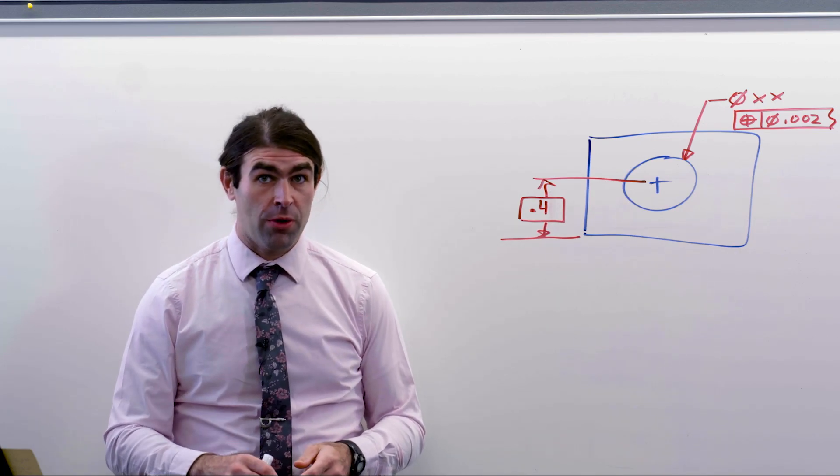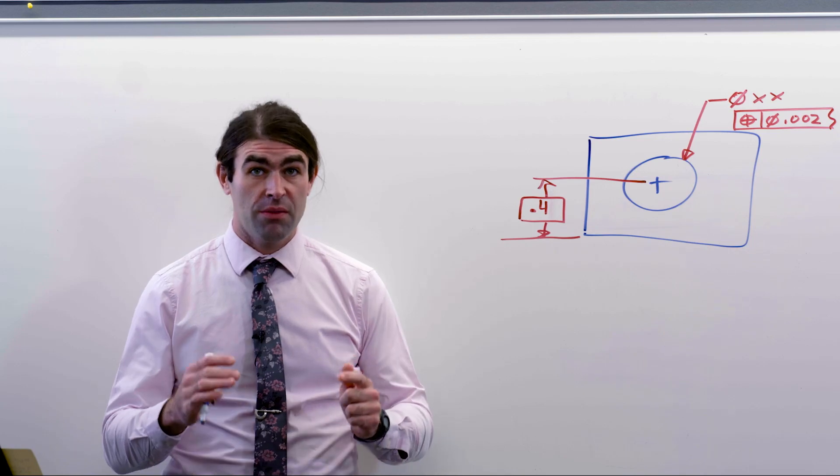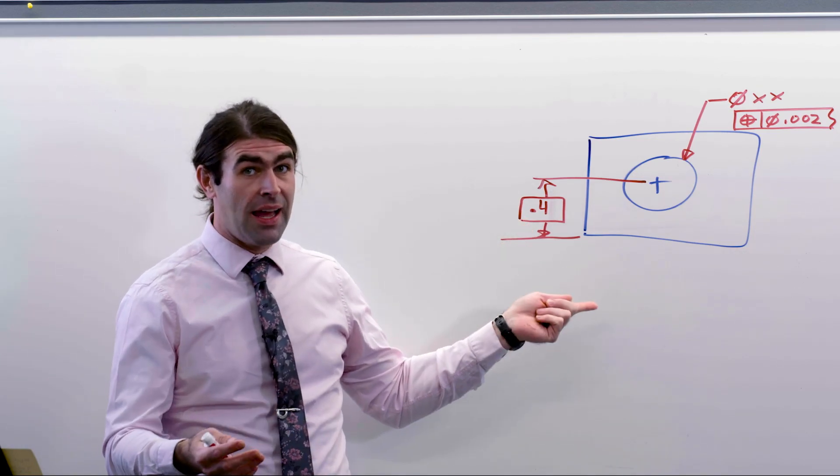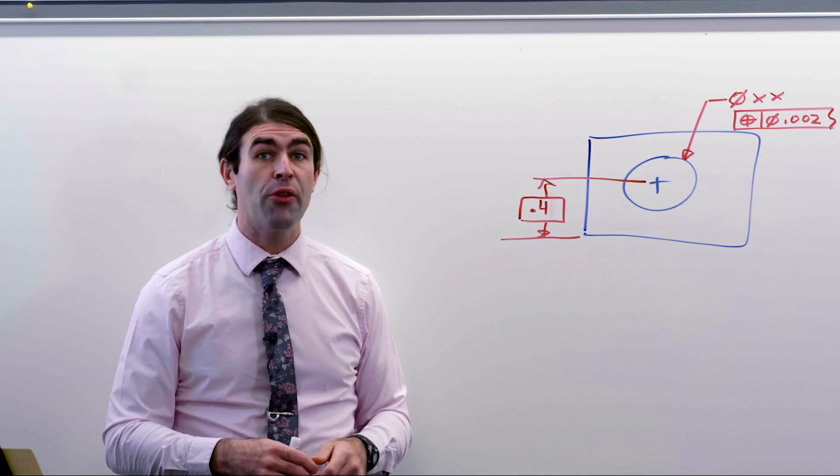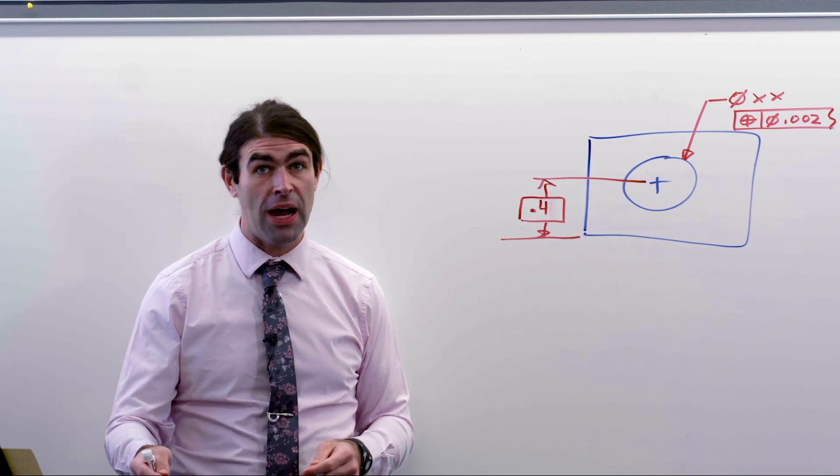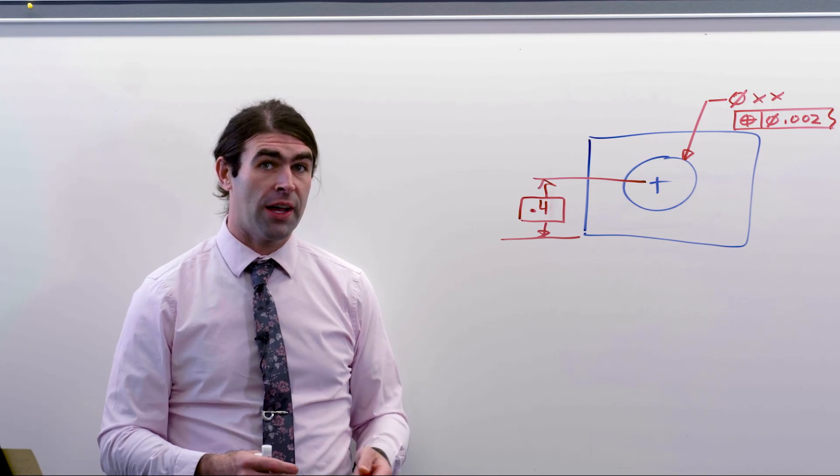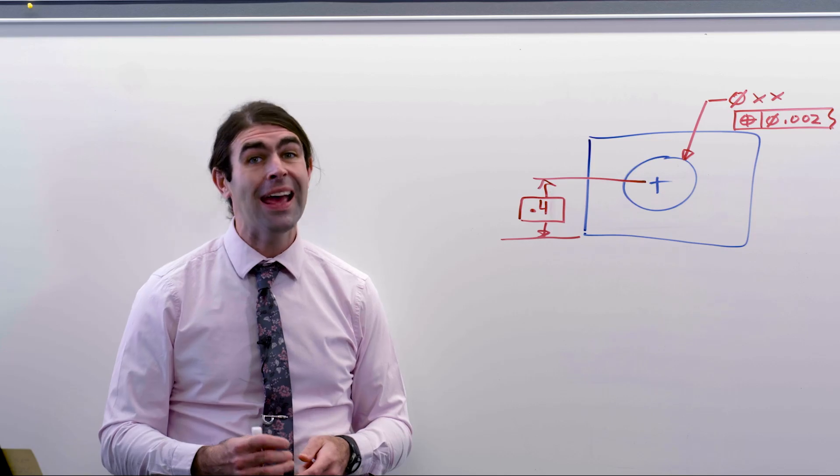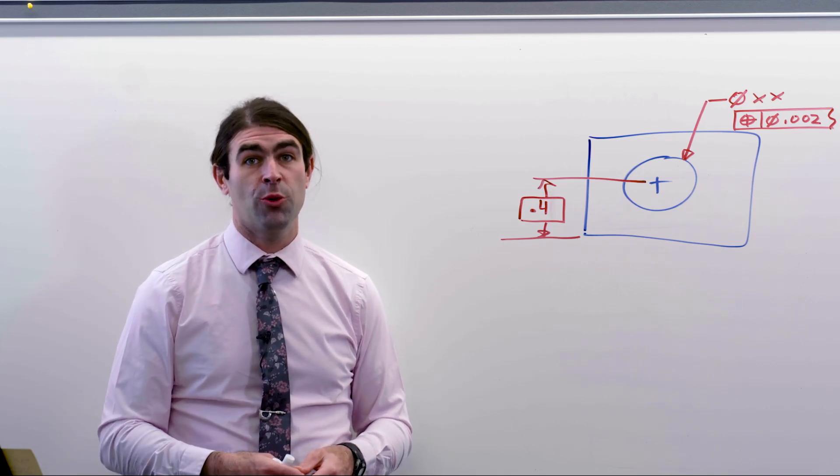As I said before, the drawing takes precedence. Technically, if this is 0.4, then that's where the tolerance zone is. But what I'm saying is, now there's a discrepancy between the model and the drawing, which is usually not good. So, that's why I don't like this change that, again, is carried over into 2018.